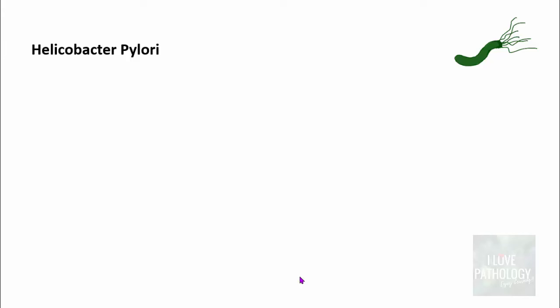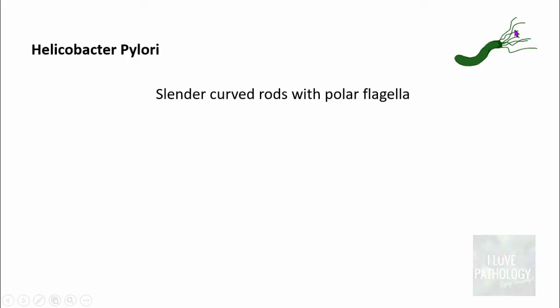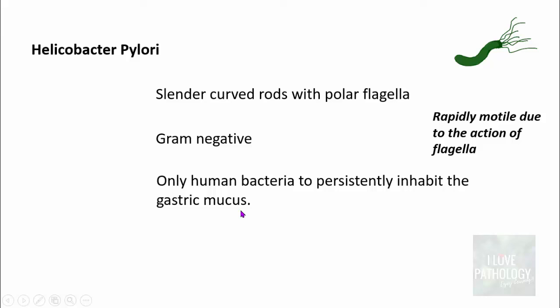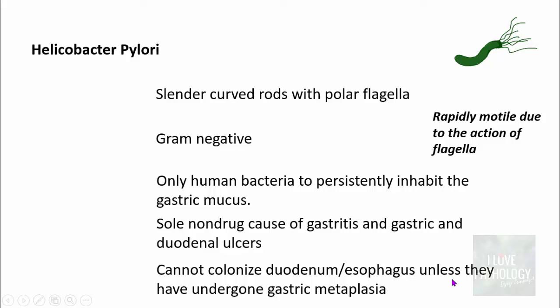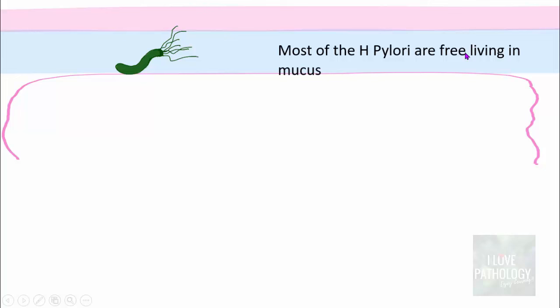Now let us see what H. pylori does and how this organism injures the gastric mucosa. Helicobacter pylori are slender curved rods with polar flagella — one end contains multiple flagella responsible for rapid motility. They are gram-negative bacilli and are the only human bacteria to persistently inhabit the gastric mucosa. They are the sole non-drug cause of gastritis and gastric and duodenal ulcers. They cannot colonize the duodenum or esophagus unless those sites have undergone gastric metaplasia. Normally, most H. pylori are free-living in the mucus, entering from the luminal aspect by motility via their polar flagella.